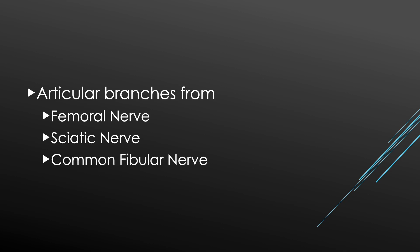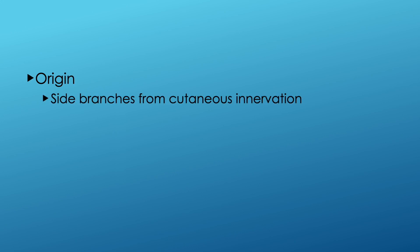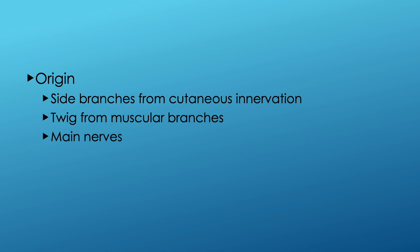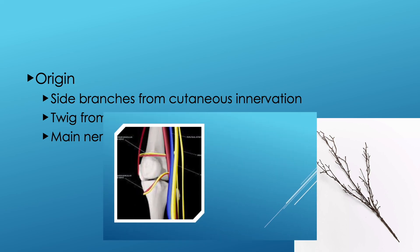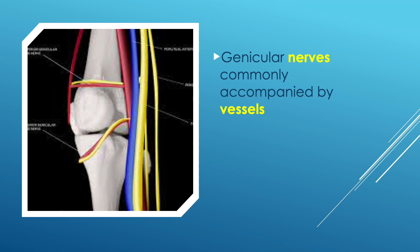In addition, some doctors have reported the contribution of the obturator nerve to the knee joint. The articular branches arise from side branches from cutaneous nerves such as the saphenous nerve, twigs from muscular branches, and main nerves. A twig from muscular branches supplies the upper part of the knee joint most. Genicular nerves are commonly accompanied by vessels, so I usually trace the vessel instead of the nerve because arterial pulsation is more visible.